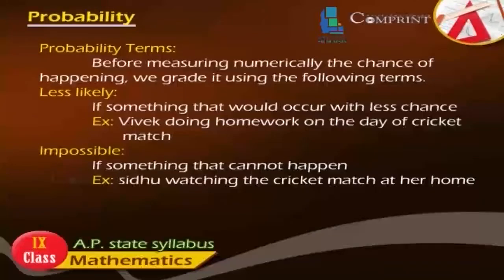Less likely: If something would occur with less chance. Example: Vibeg doing homework on the day of a cricket match. Impossible: If something cannot happen.